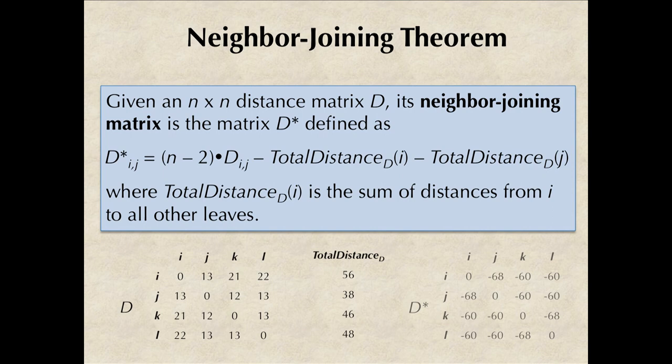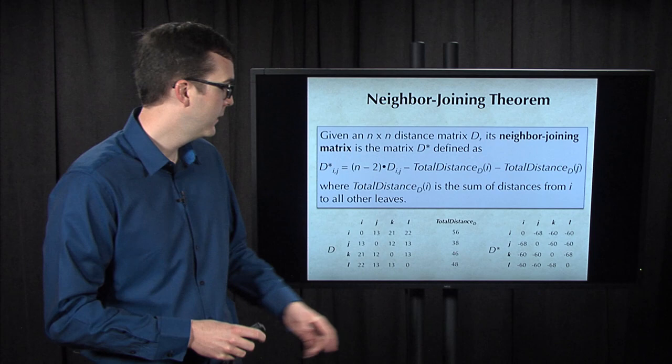We define D* of ij by taking n minus 2 times D of ij and then subtracting the total distance of i and subtracting the total distance of j. In this case, n, the number of leaves or rows in our distance matrix, equals 4. So D* of kl equals 2 times D of kl, which is 13, minus 46, minus 48, which gives us a value of negative 68 for D* of kl.